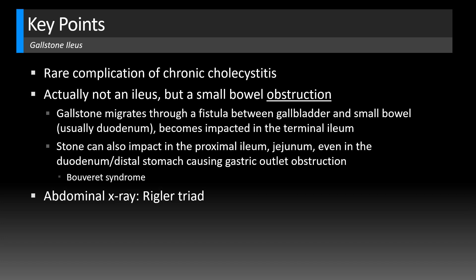On abdominal x-ray, look for Rigler's triad — and don't confuse that with the Rigler sign, which is when you have pneumoperitoneum outlining the bowel wall. Rigler also named his triad here: small bowel obstruction, pneumobilia, and a gallstone in the right iliac fossa. Note that gallstone ileus is definitely not the most common cause of pneumobilia — we see that often after procedures like ERCP where a sphincterotomy is done, which is an expected finding that can be seen for months to years and is not concerning. But you want to look for these additional secondary findings when you see pneumobilia.